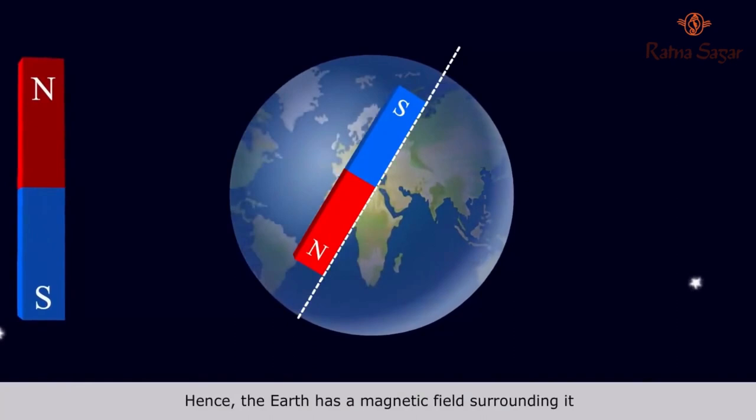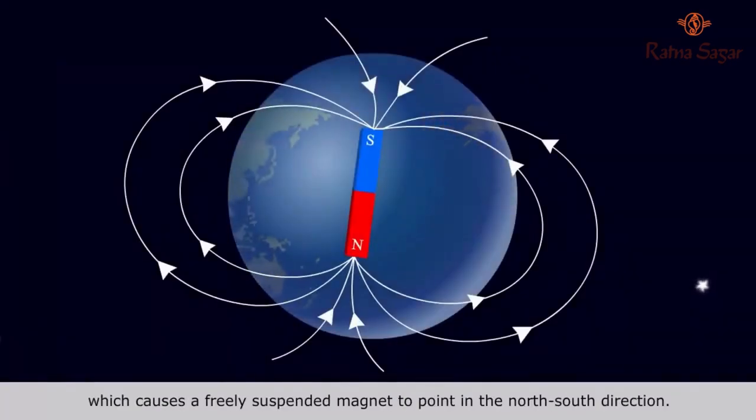Hence, the Earth has a magnetic field surrounding it which causes a freely suspended magnet to point in the North-South direction.